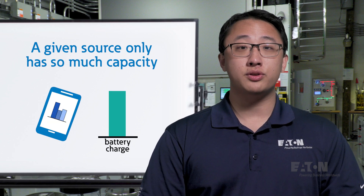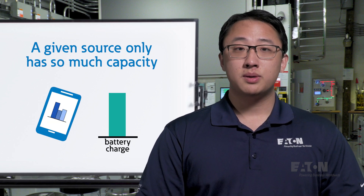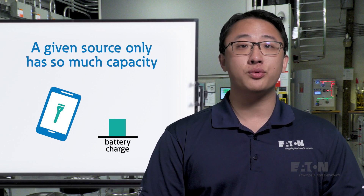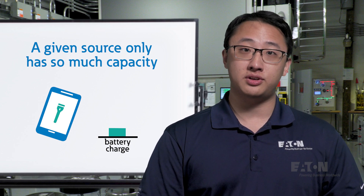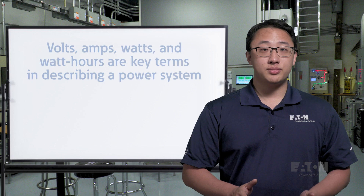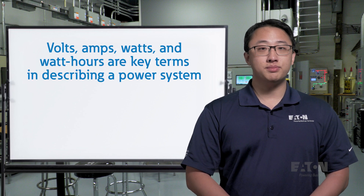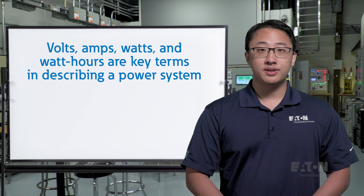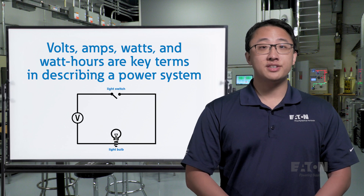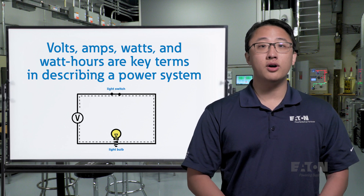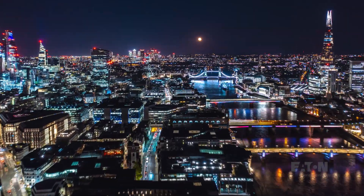And third, a given source only has so much capacity. Your phone will last a while when you use it normally, but if you accidentally leave the flashlight on, then the battery will drain a lot faster and it wouldn't last nearly as long. Volts, amps, watts, and watt-hours are all terms that help describe these relations in more detail, and they're key to designing any power system, be it an electronic circuit all the way up to an entire city's electrical infrastructure.